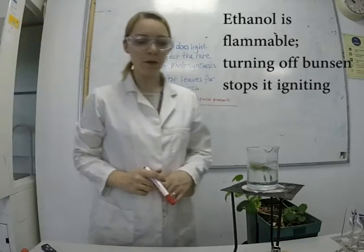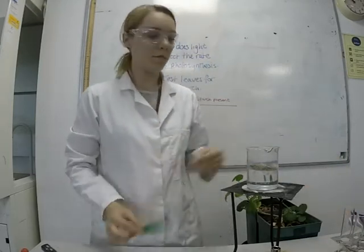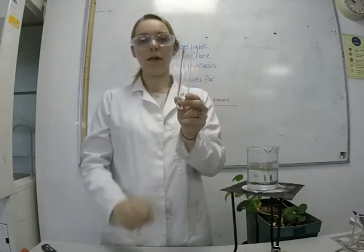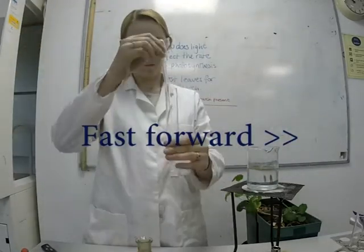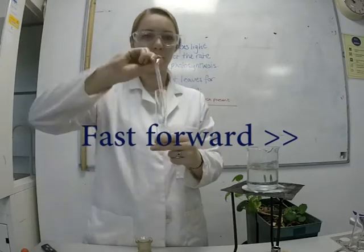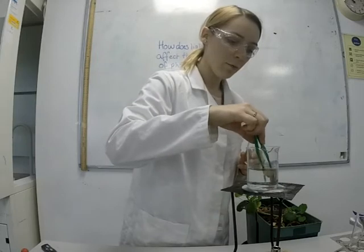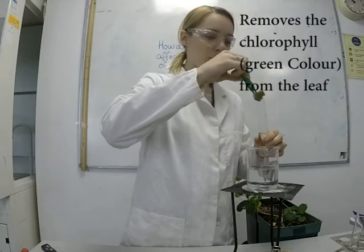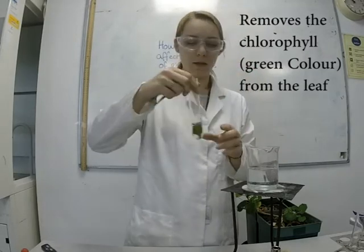Now that all the Bunsen burners are off, we can get the ethanol. Take your leaf out of the hot water carefully, then place two fingers' worth of ethanol into a boiling tube using a pipette. Using tweezers, take out your leaf and put it into the ethanol.